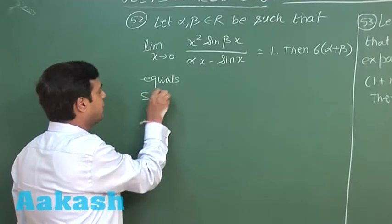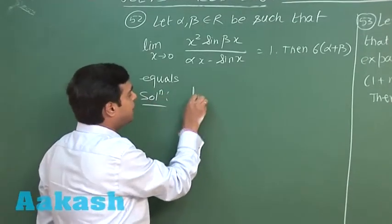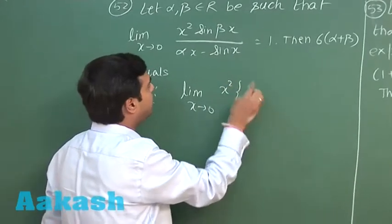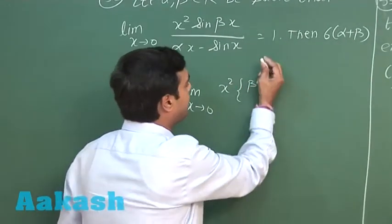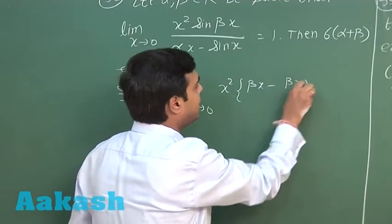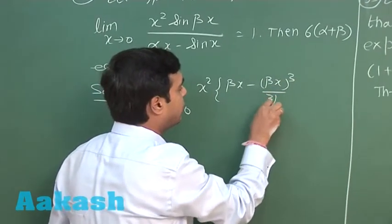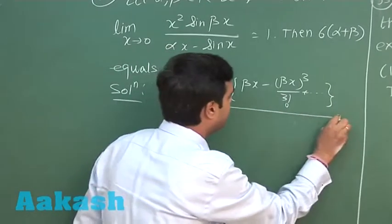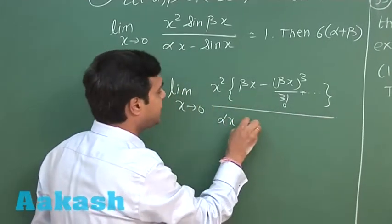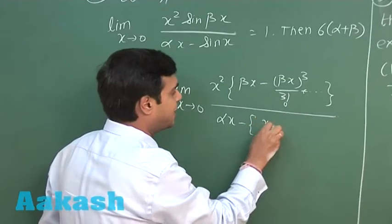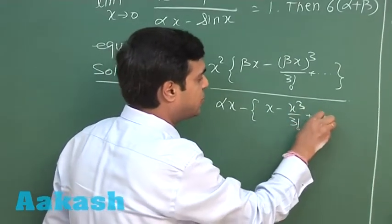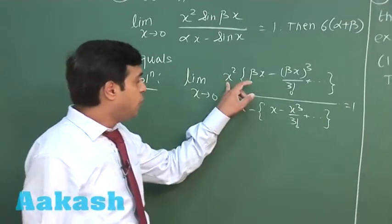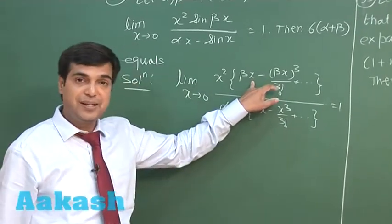Let us try this one. We can start it by using expansion x square multiplied with beta x minus beta x whole cube upon factorial 3 and so on divided by alpha x minus x minus x cube upon factorial 3 and so on is equal to 1. We can see the lowest power of x in numerator is 3.